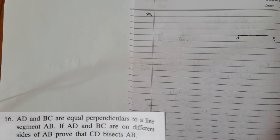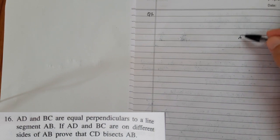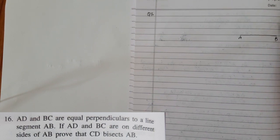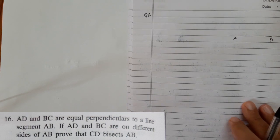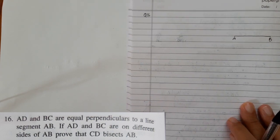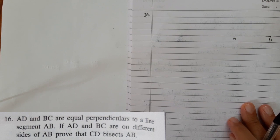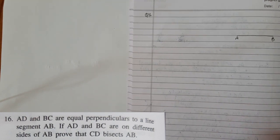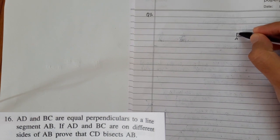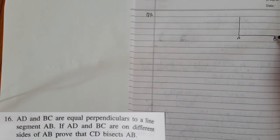Now perpendicular where? Where, up or down stairs, down, up or down, we don't know. So let me just read ahead. If AD and BC are on the different side of AB, that means one is up and one is down.